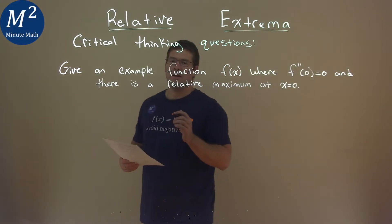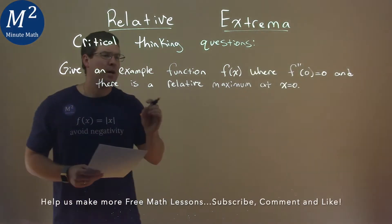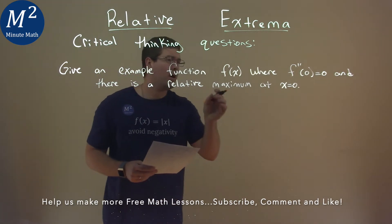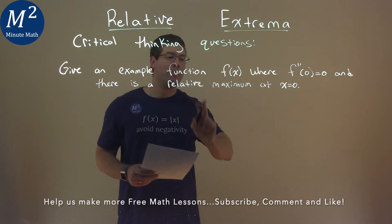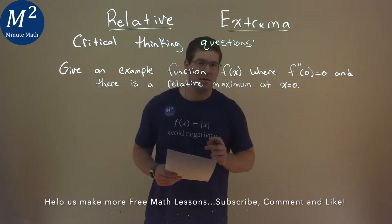We're given this critical thinking question. Give an example function f(x), where f''(0) = 0, and there is a relative maximum at x = 0.